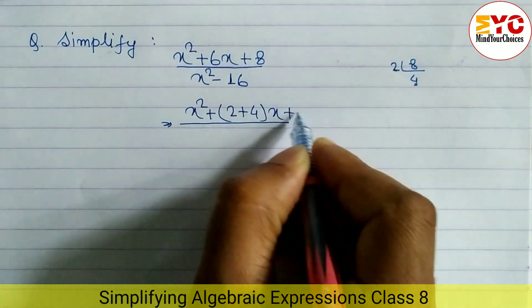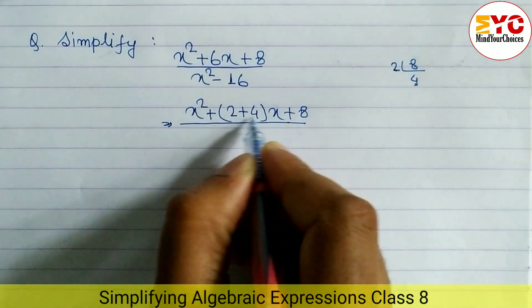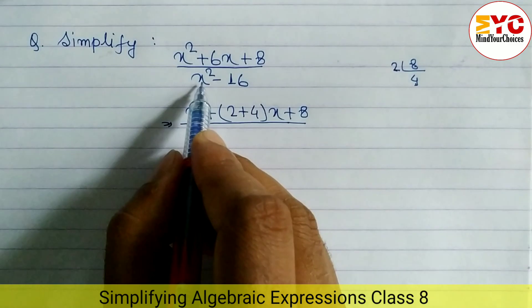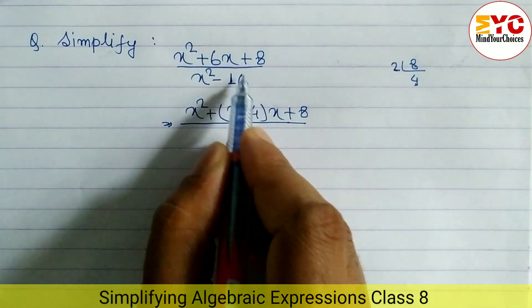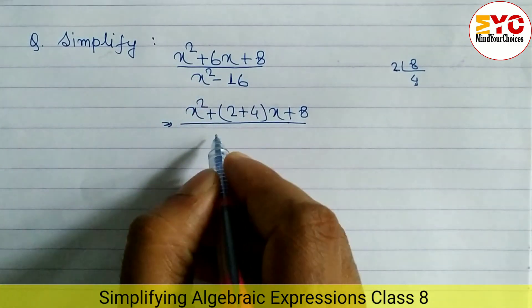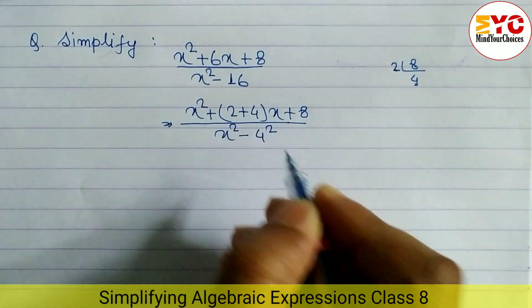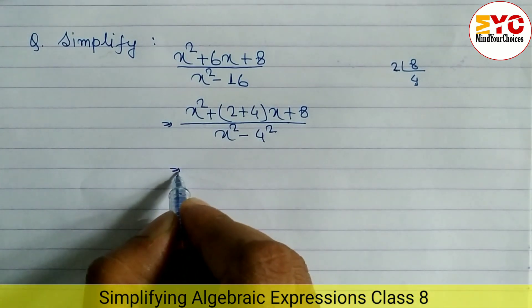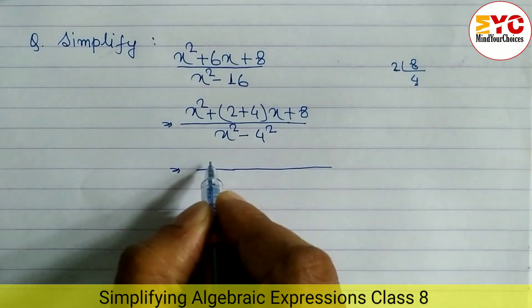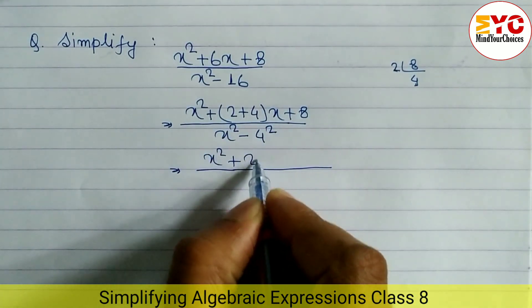Okay, you can write 4 + 2 also, doesn't matter. Now we can convert the denominator in the form of a² - b². Square root of 16 means 4, so we can write x² - 16 as x² - 4². Now open the bracket: x² + 2x + 4x + 8.